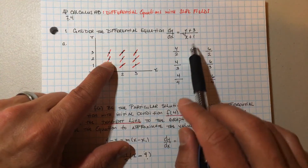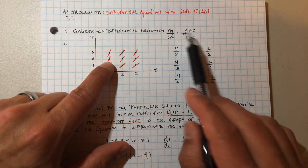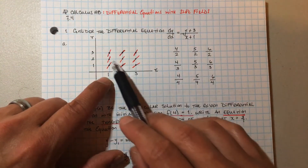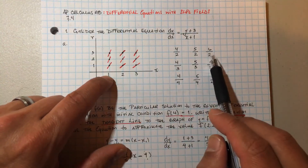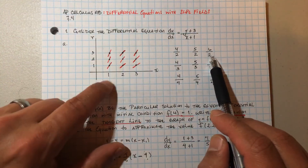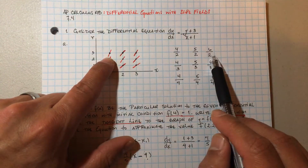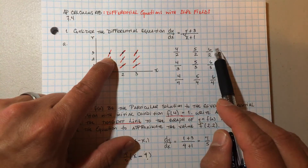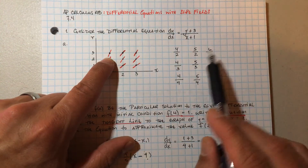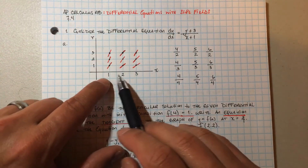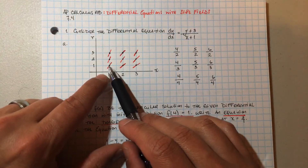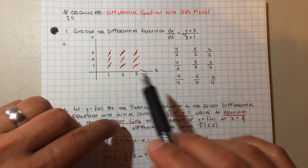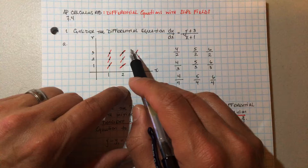For (1, 2) you get 5/2, and you just graph it as well. Same thing for (1, 3): you still get 2 on the bottom, and on top you get 3 + 3 = 6, so 6 over 2 gives you a slope of 3. You just graph the slope as best you can.